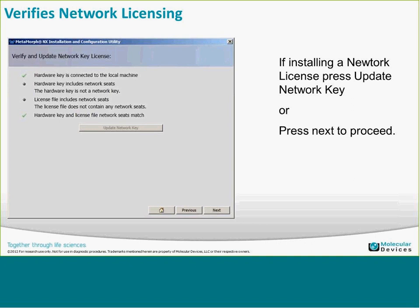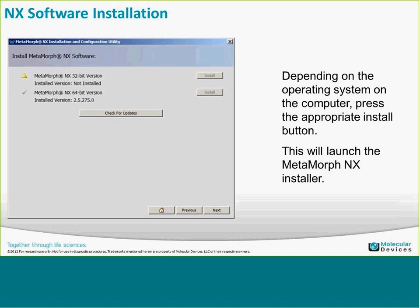If you're not doing a network licensing install, just click Next through this section. The last section is the actual software installation. Depending on your operating system — whether 32-bit or 64-bit — you can also install a 32-bit version onto a 64-bit OS, though most hardware drivers are now 64-bit compatible. If you're on a 64-bit OS, I'd recommend the 64-bit option.